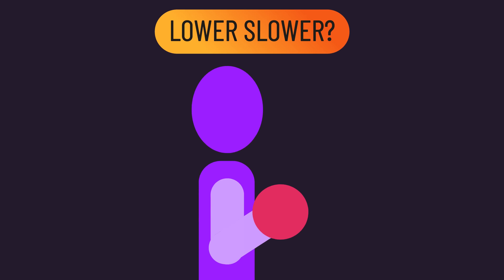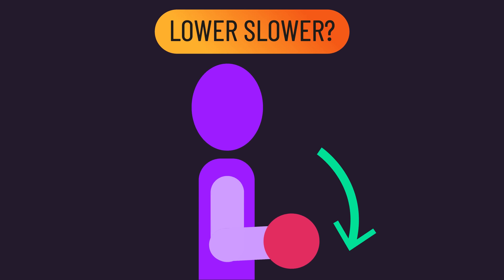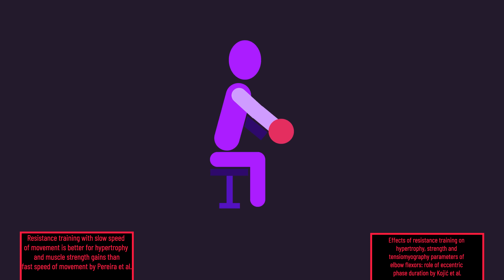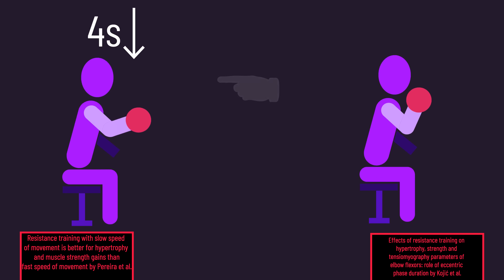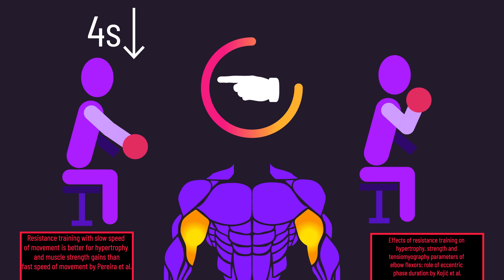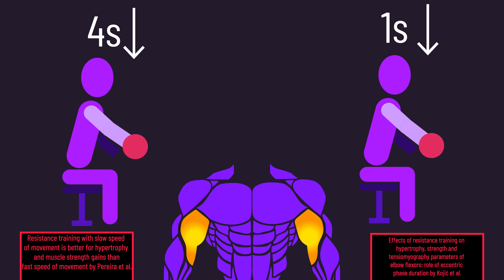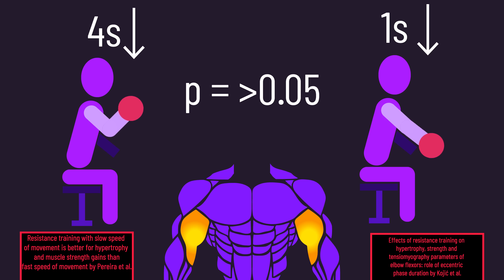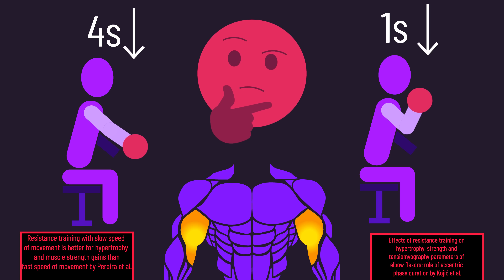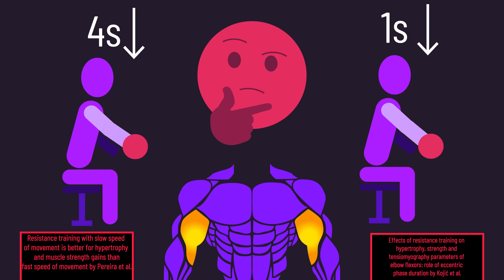What about exclusively slowing and prolonging time under tension in the lowering, eccentric phase of an exercise? Unfortunately, the research is unclear and conflicting. Two studies found that with a preacher curl using a 1-second lifting tempo, a 4-second lowering tempo tended to be better for biceps gains versus a 1-second lowering tempo. However, the differences in both studies were not statistically significant, meaning it's unclear if the differences reflect a true effect or just random variation.